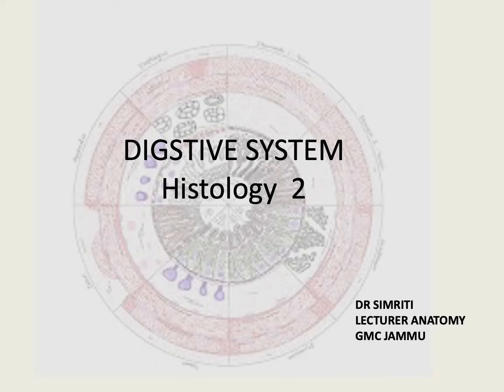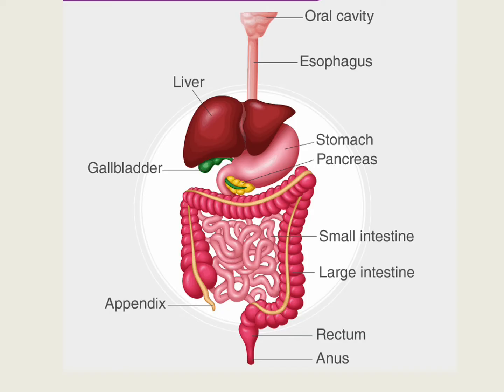In the following slides, we will discuss the general plan of histology of the digestive system. The gastrointestinal tract, or alimentary canal, is a long muscular tube that begins from the oral cavity and ends at the anal canal. The different parts of the tract are specialized to perform different functions, and hence there are structural modifications which can be seen in the different parts of the gastrointestinal tract.